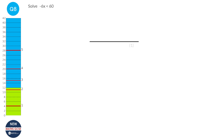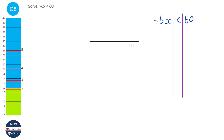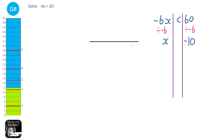We have minus 6x is less than 60. Dividing both sides by minus 6 gives x on the left and 60 ÷ (−6) = −10 on the right. Crucially, whenever you multiply or divide both sides by a negative number, you must switch the inequality sign. So instead of pointing left it now points right, and our answer is x is greater than minus 10.